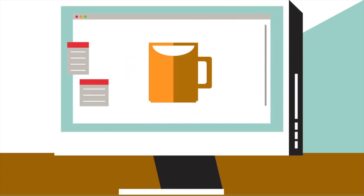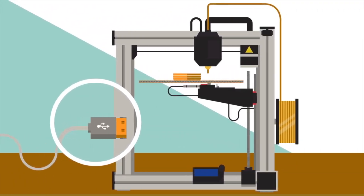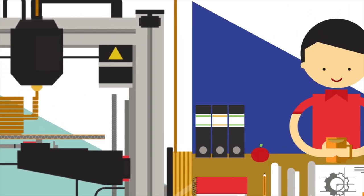How does it work? First, a design is created. The software makes printable layers. The 3D printer then melts the material and stacks the layers on top of one another. All ready to use.